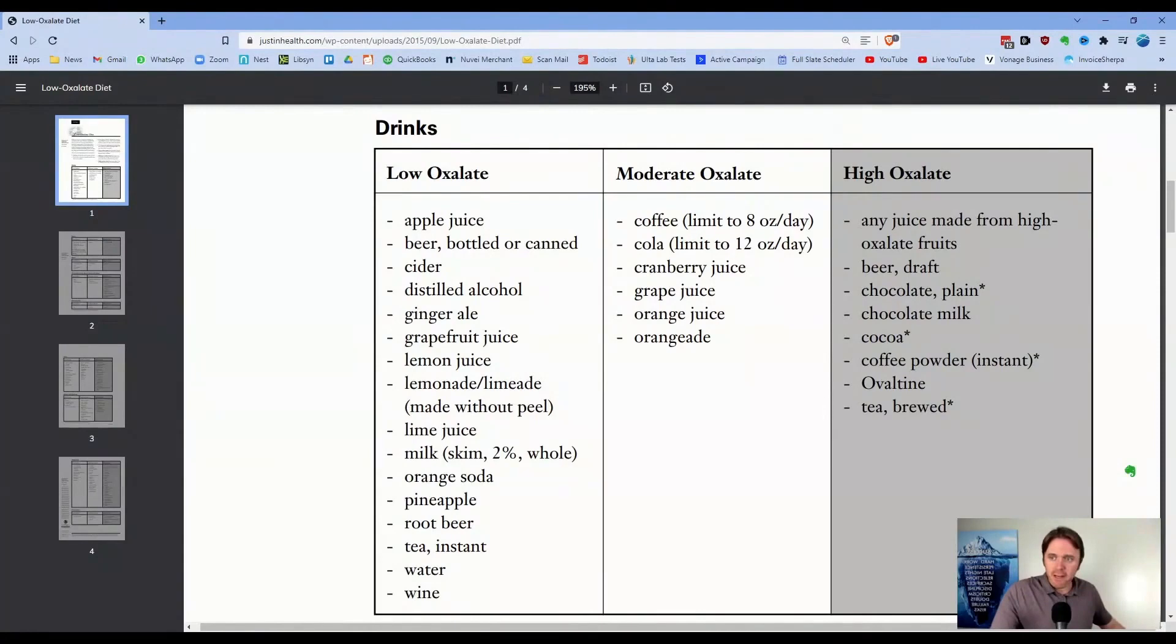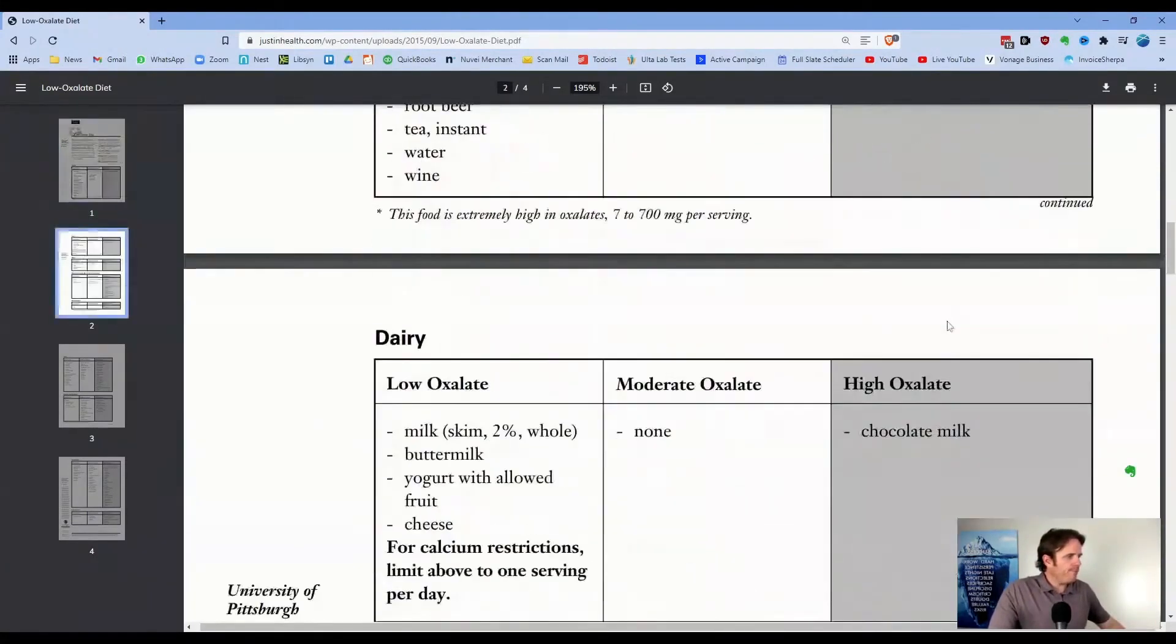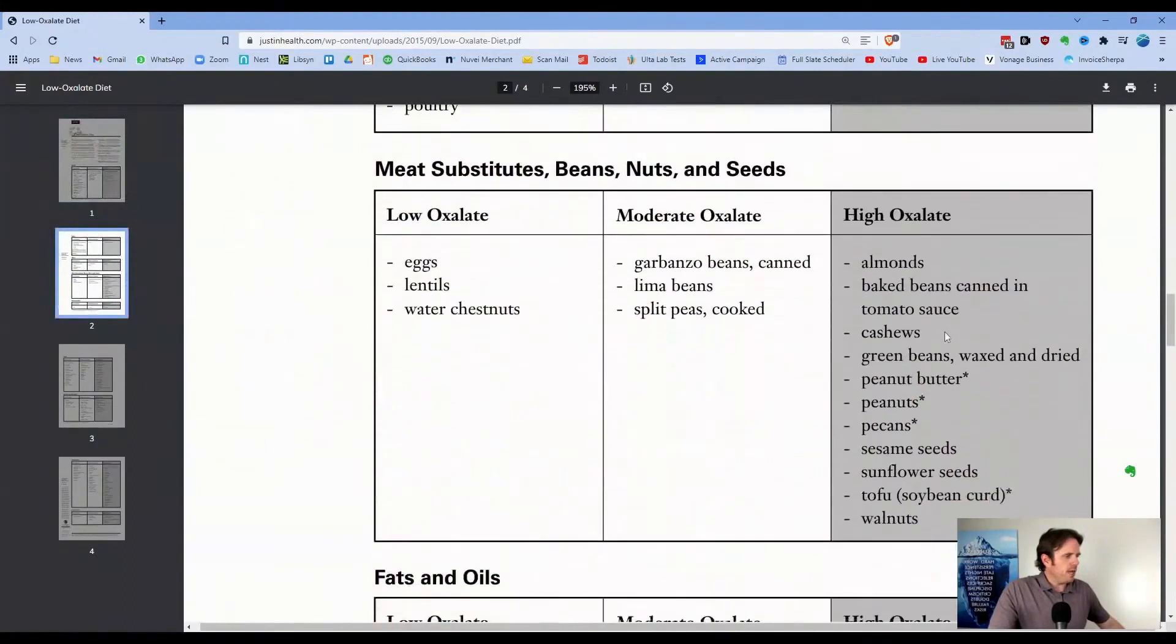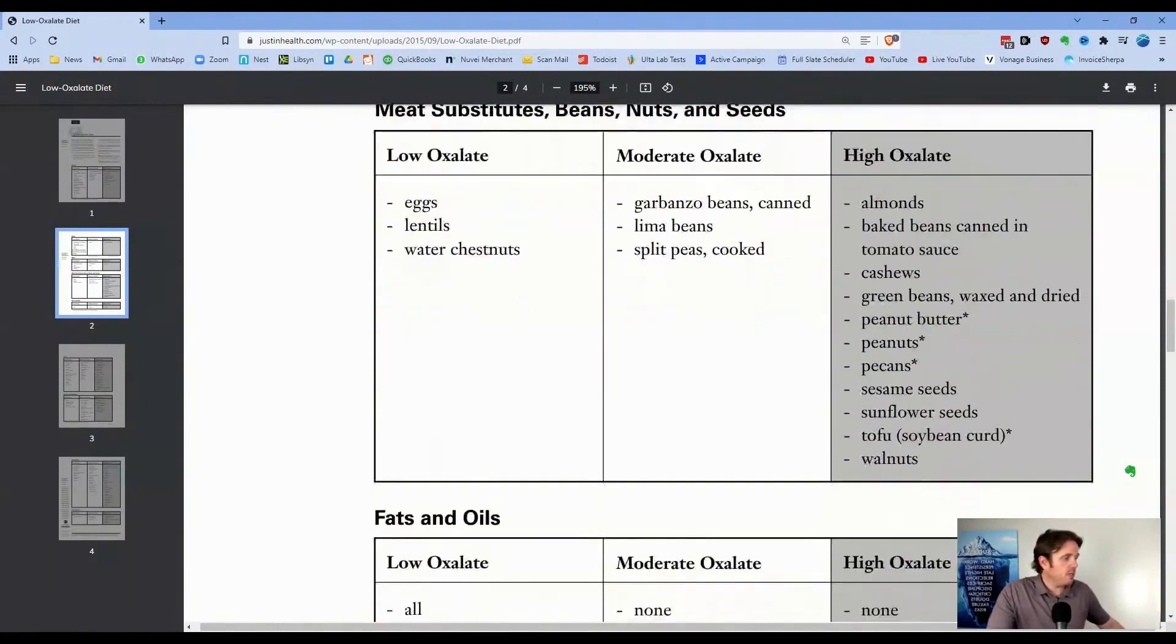Of course, we wanna make sure we're not feeding a lot of the yeast because usually the yeast are gonna be fed with excess sugar, processed stuff as well. But you can see a lot of the high oxalates can be beer, chocolate. You're gonna see on the fruit side, or on the vegetable side, you'll see spinach is really high. So you can see some of the seeds. You may get some benefit cutting out some of the seeds as well.